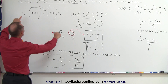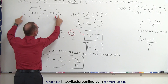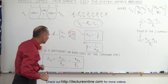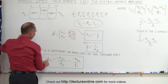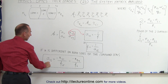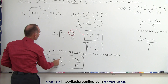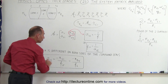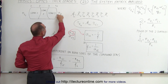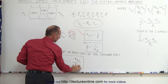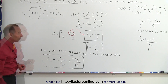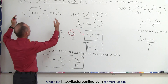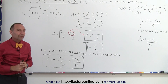This assumes that the indices of refraction on both sides of the lens are equal to one another. What if they are not? If N is different on both sides of the compound lens, then element A12 is equal to the negative of the index of refraction on the incident side divided by the effective focal length on the object side, or equivalently, the negative of the index of refraction on the transmit side divided by the effective focal length on the image side of the lens. This means the effective focal length on both sides of the lens would not be the same, because we have different indices of refraction on both sides of the compound lens system.